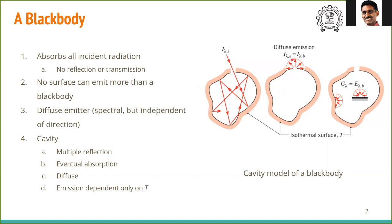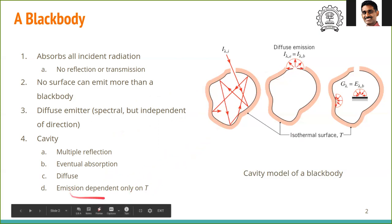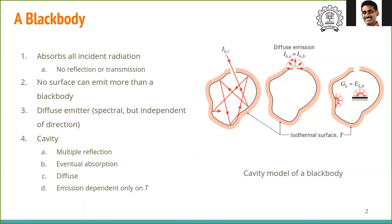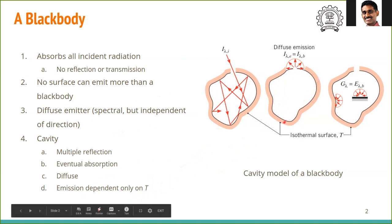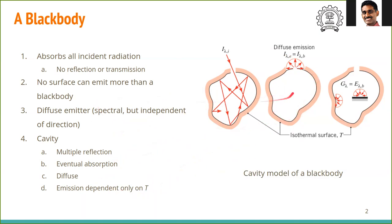The emission is uniform in all directions. It could be a function of lambda, but it is uniform in all directions, so therefore it is diffuse. The emission is dependent only on temperature — there is no other parameter, no reflection or anything else coming out. Since what comes out is dependent only on temperature, that is blackbody radiation.